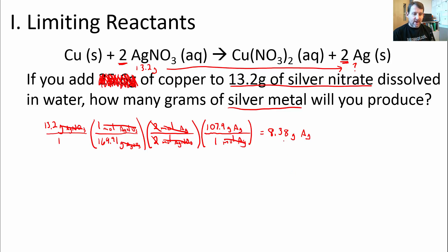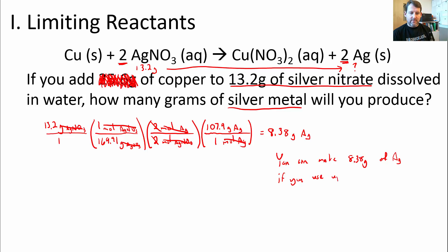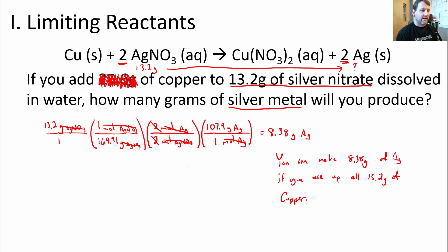So our answer is 8.38 grams of silver — you can make 8.38 grams of silver if you use up all 13.2 grams of silver nitrate. One last thing to look at: oftentimes you also want to know how much of the excess reactant remains. In this case, copper is our excess reactant. Let's figure out how much copper is left over.